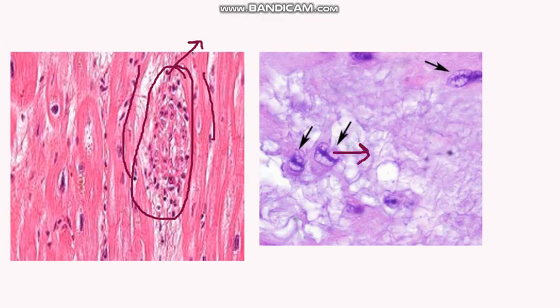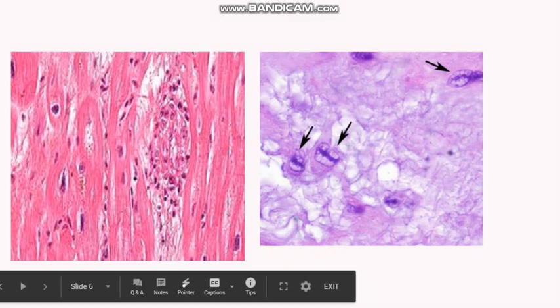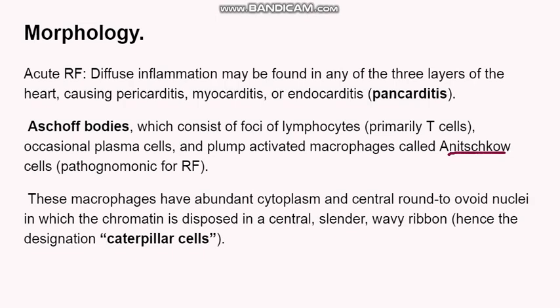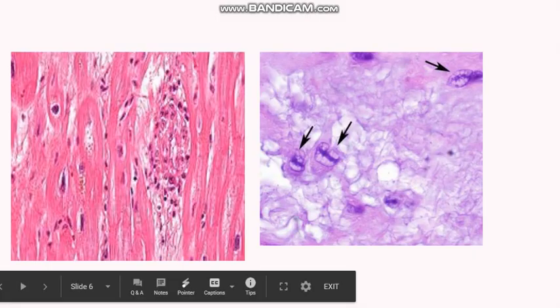These macrophages are very typical of rheumatic heart disease and are known as Anitschkow cells. Here you can see these Anitschkow cells — they are plump activated macrophages and are very pathognomonic of rheumatic fever. What is very characteristic of these cells is that the nucleus has chromatin with a wavy ribbon-like appearance. So these are also known as caterpillar cells because they resemble somewhat like a caterpillar, as you can see here.